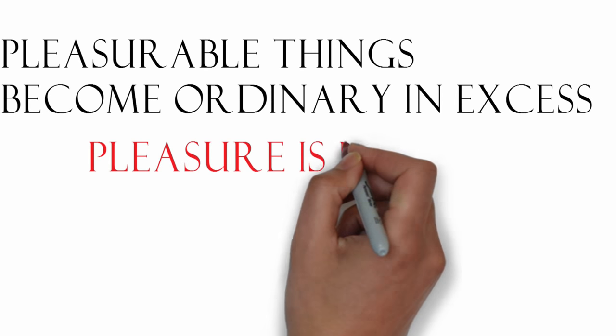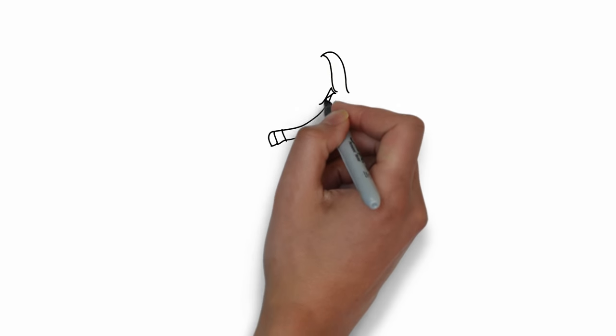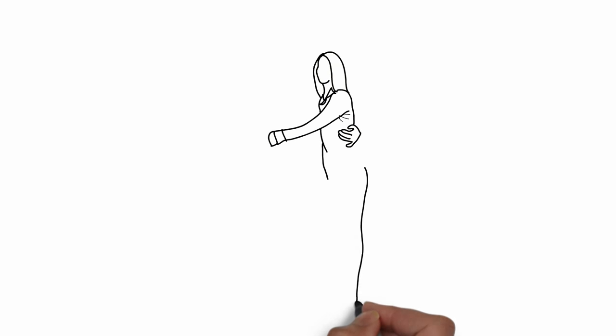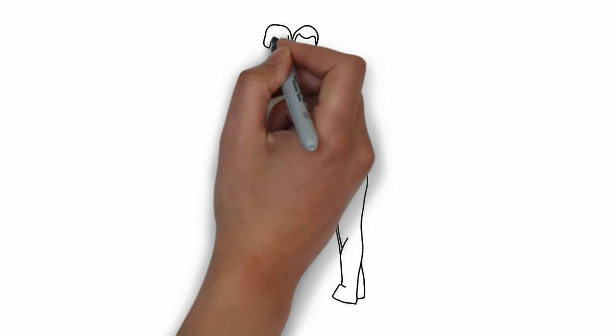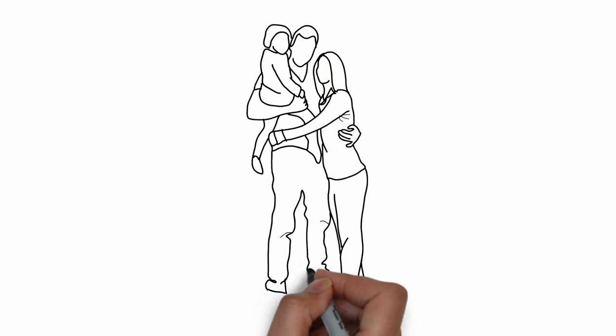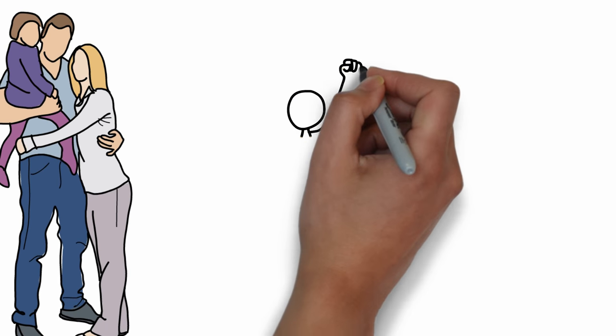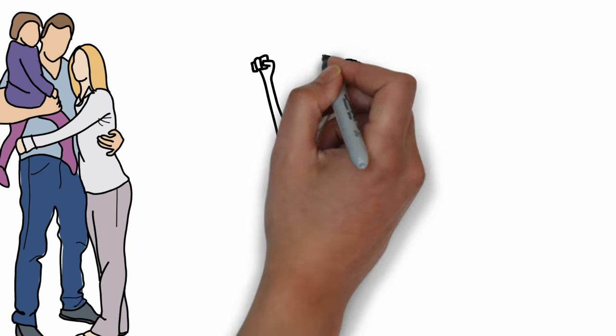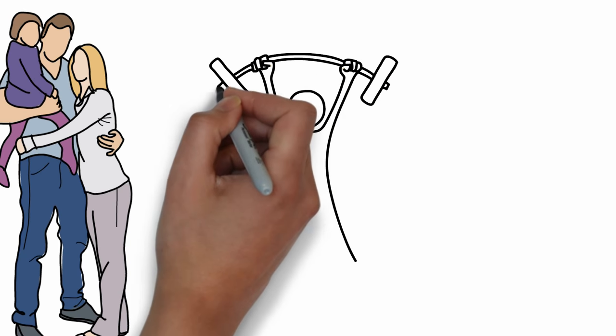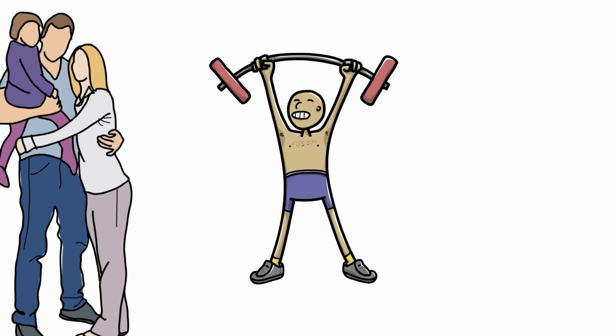So what's fulfilling? Fulfilling things are things that allow you to grow - things such as joining a new sport, perhaps learning a new martial art, learning a new language, learning how to code. Fulfilling things are improving in your business, improving in your health and fitness, learning new things. Things that always require some sort of personal growth are fulfilling.